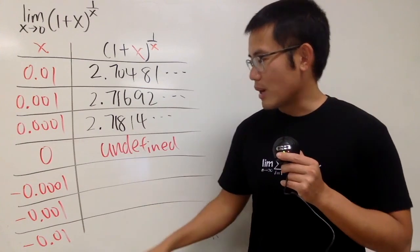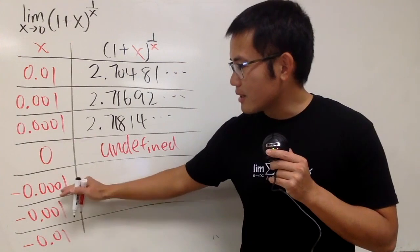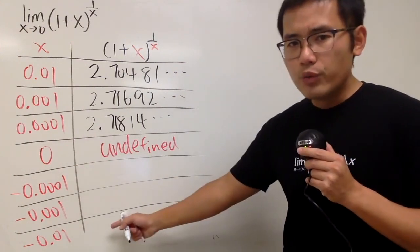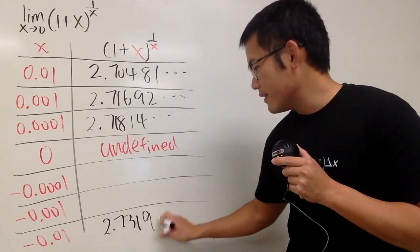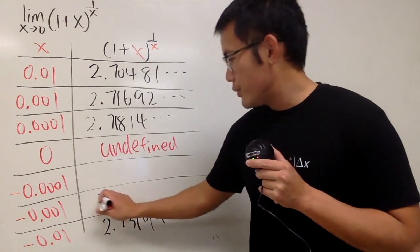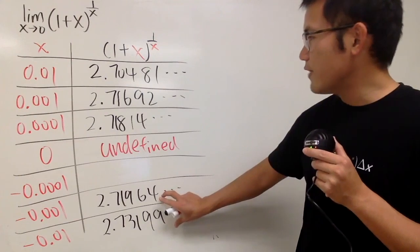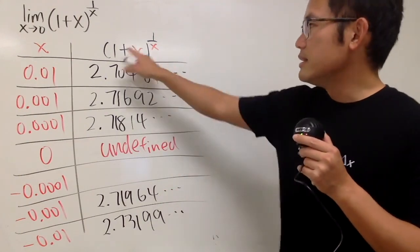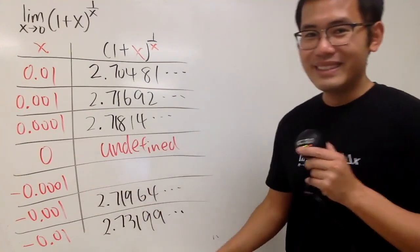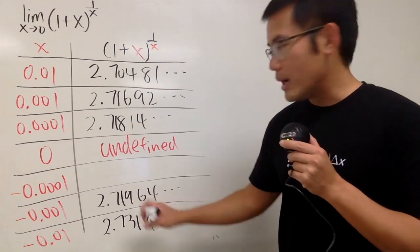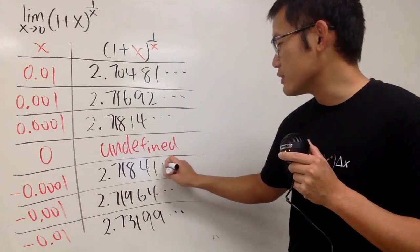Now, if we jump to the other direction, and let me just start with the bottom, from here, we will be getting closer and closer to 0 from the left-hand side. So if we have that, we will have 2.73199. And then we will have 2.71964. And notice that these values and these two values, they are different. For the last one, right here, we have 2.71841.